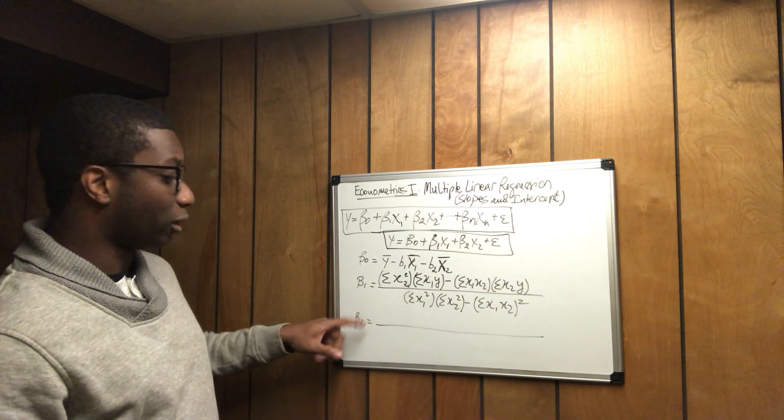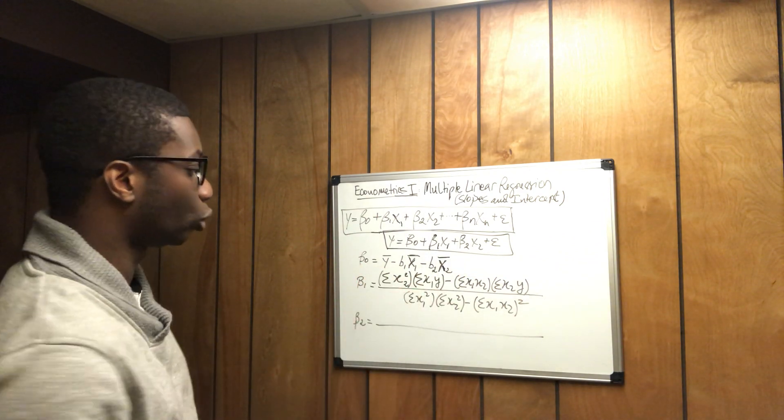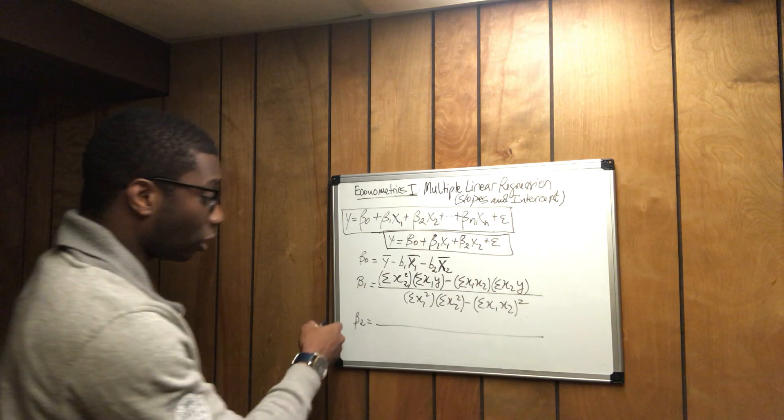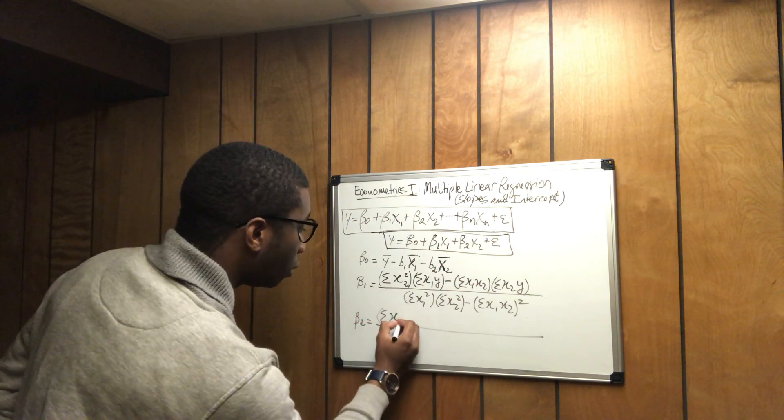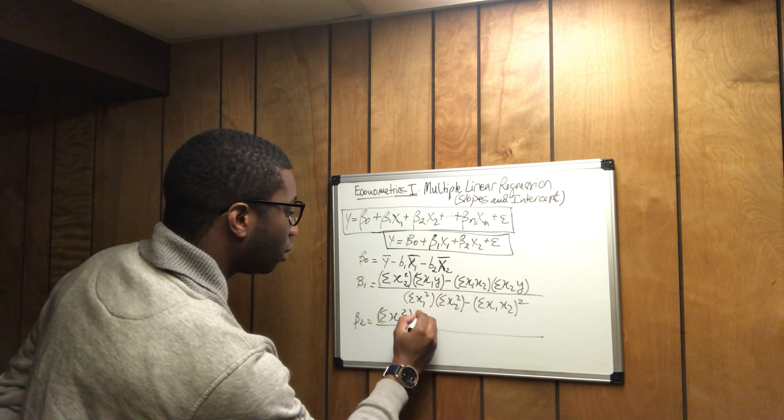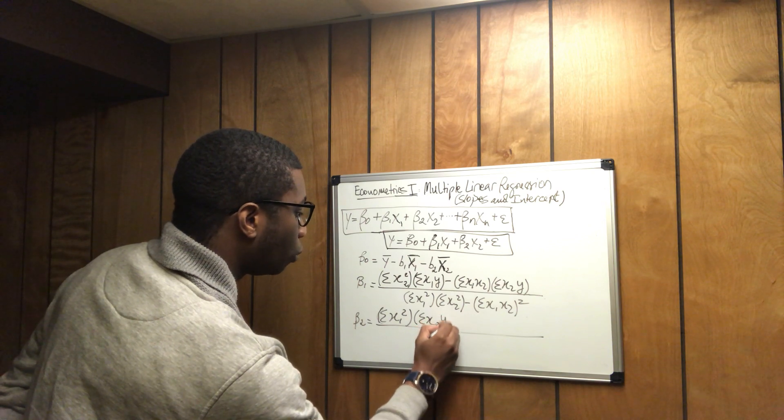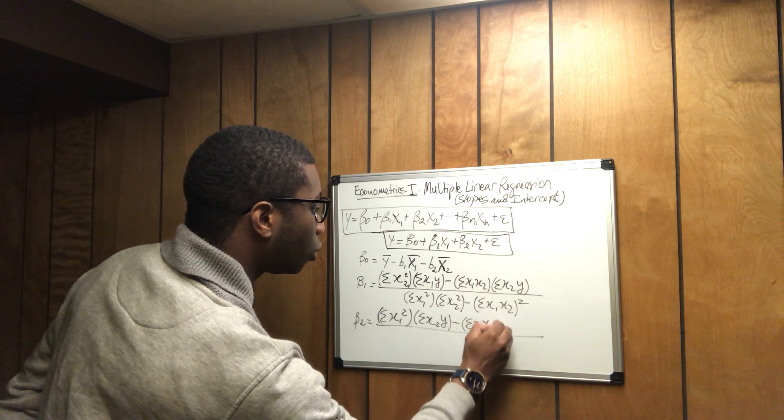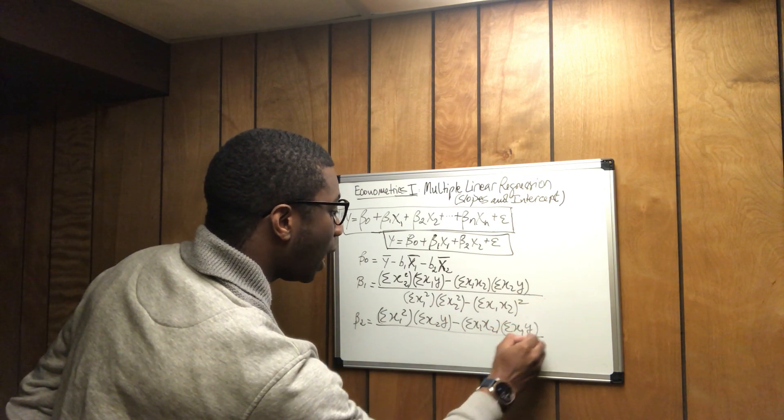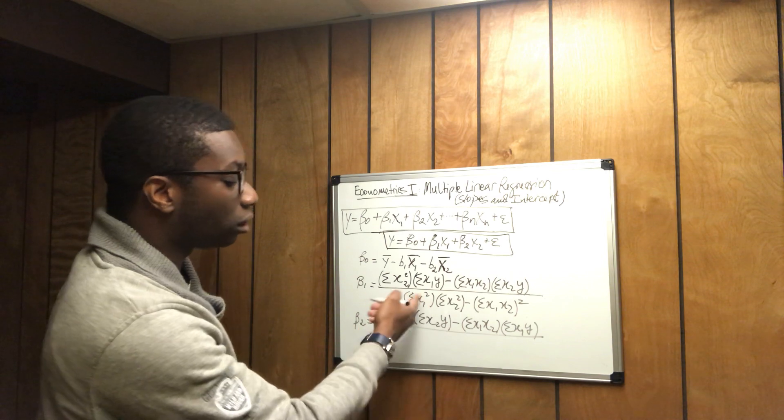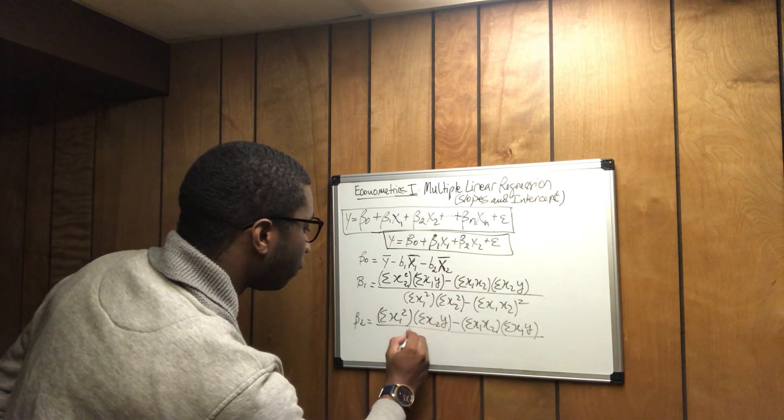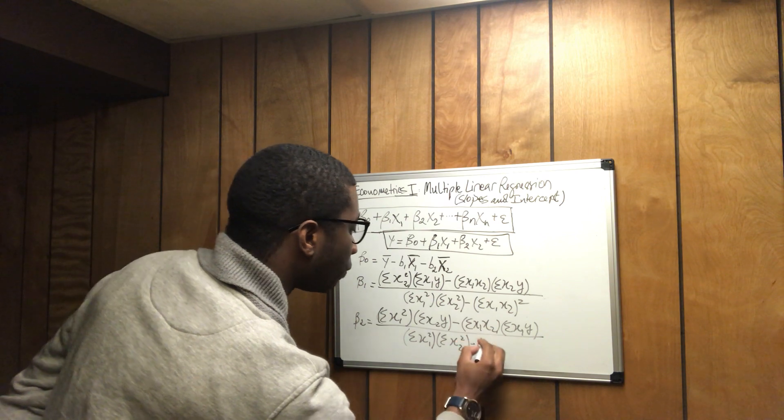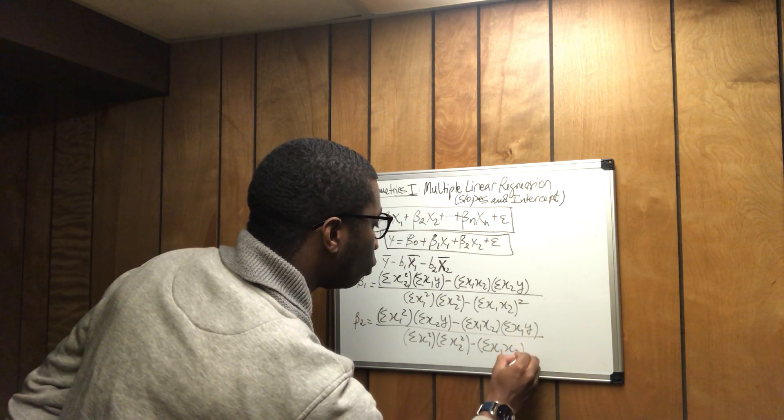And basically, how do you calculate beta 2? You simply replace some of the values. So as you see that for beta 1, you have the summation of x2 squared. So for beta 2, what are you going to have here? The summation of x1 squared times the summation of x2 times y minus the summation of x1x2 times the summation of x1y over the denominator. The denominator stays the same. So it is summation of x1 squared times the summation of x2 squared minus the summation of x1 times x2 squared.